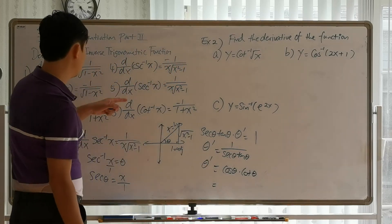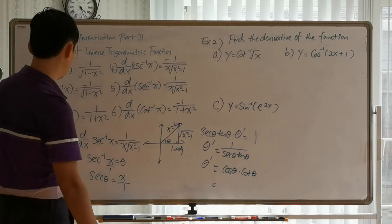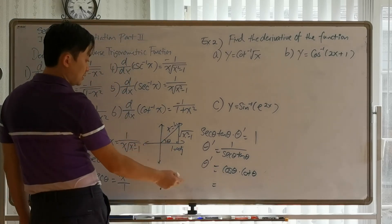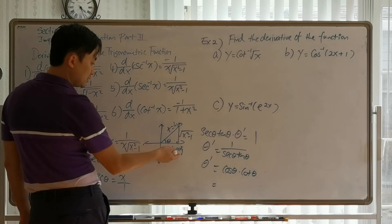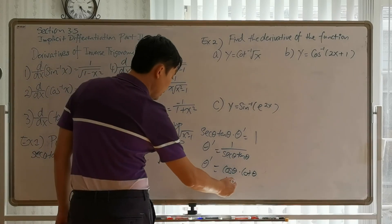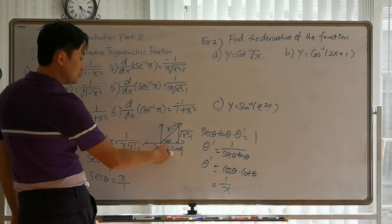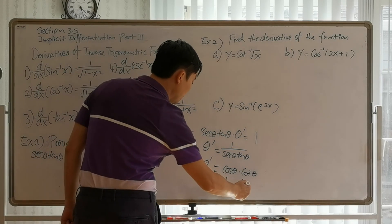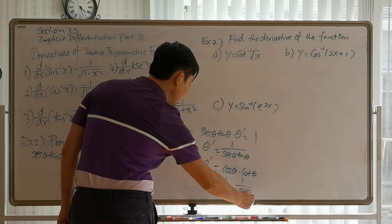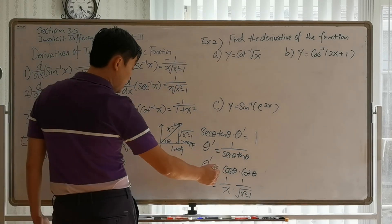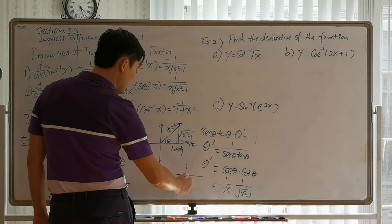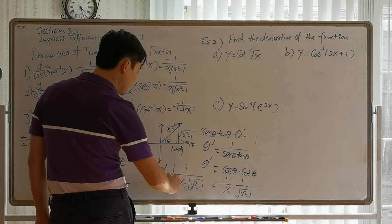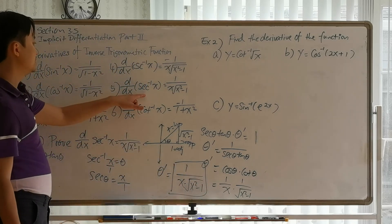The reciprocal of secant is cosine, and the reciprocal of tangent is cotangent. From the diagram, cosine of theta equals adjacent over hypotenuse, which is 1 over x. Cotangent of theta equals adjacent over opposite, which is 1 over the square root of x squared minus 1. Multiplying straight across gives us 1 over x times the square root of x squared minus 1 — the derivative of inverse secant of x.